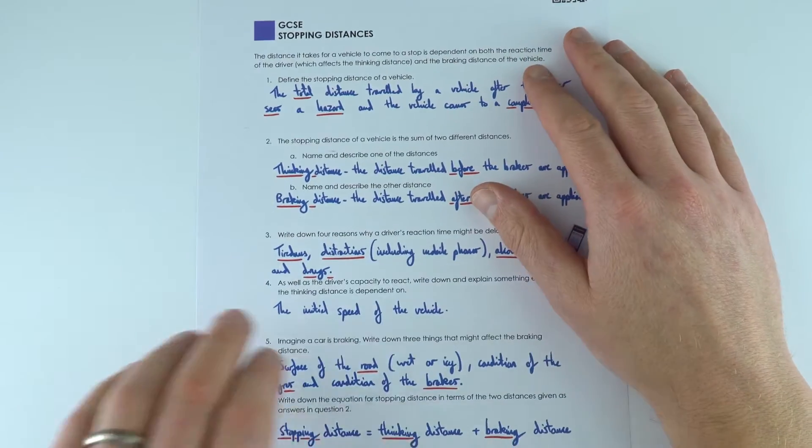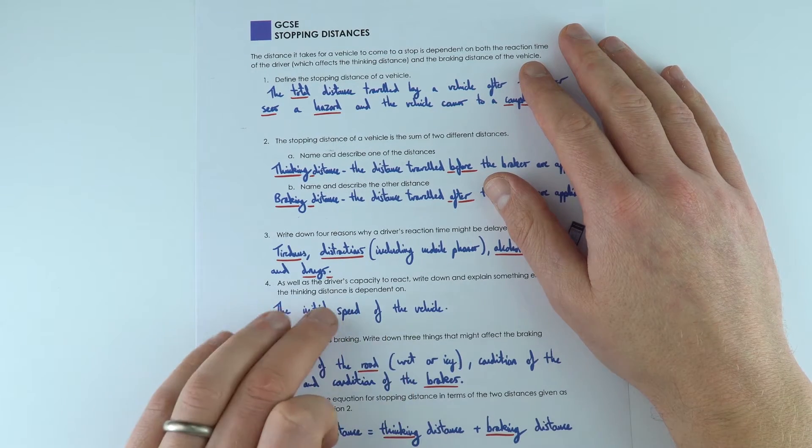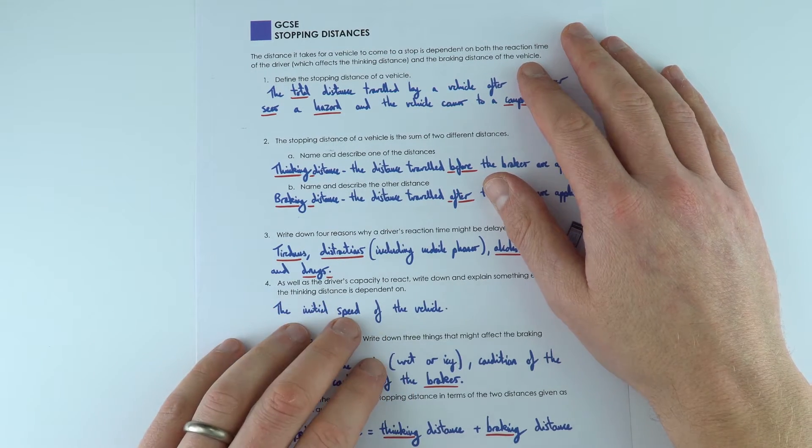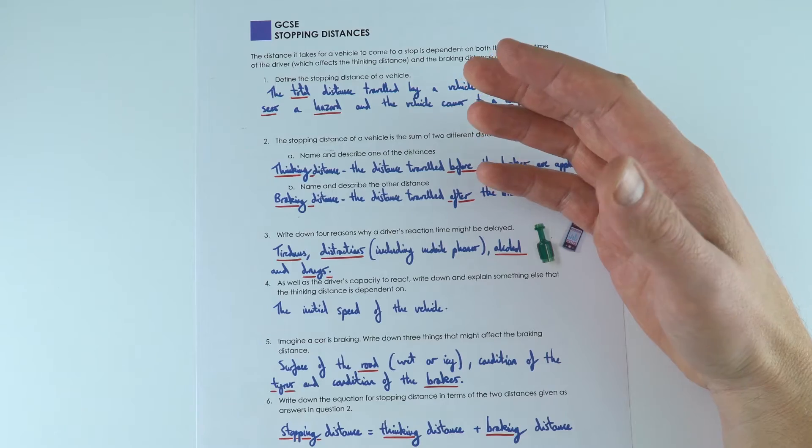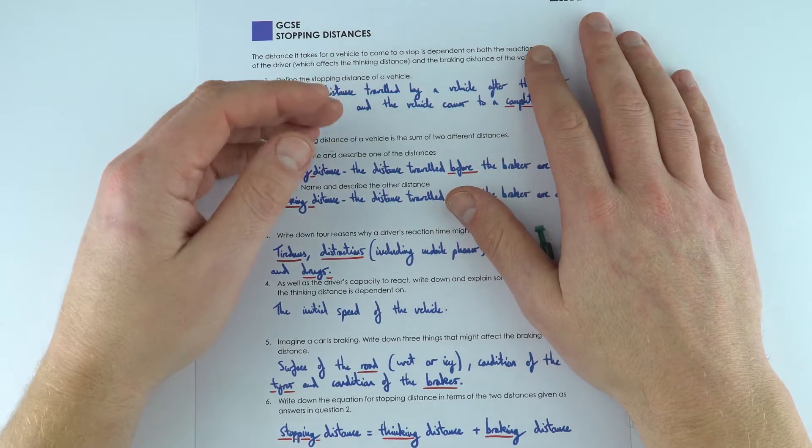The other thing that really affects the thinking distance is how fast the car is going. If it's going quicker, the car is going to travel further before the driver applies the brakes.